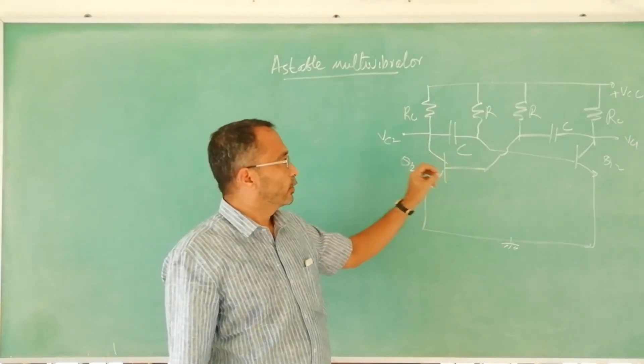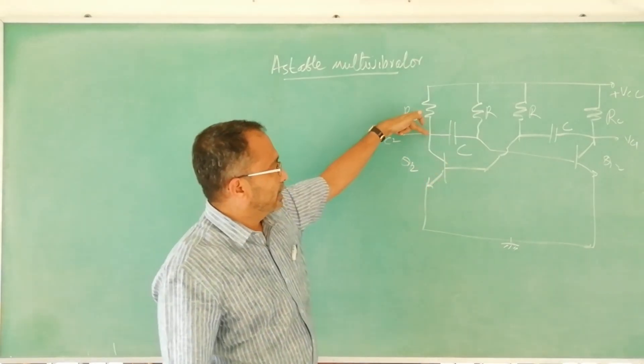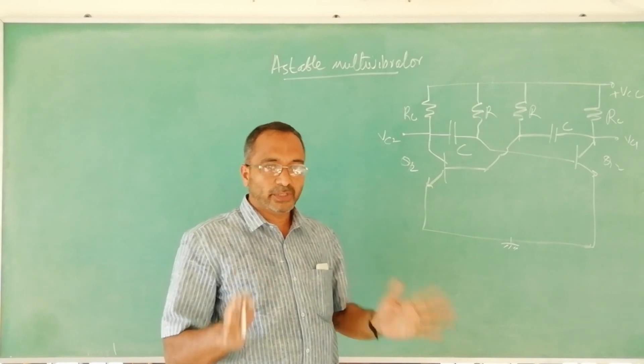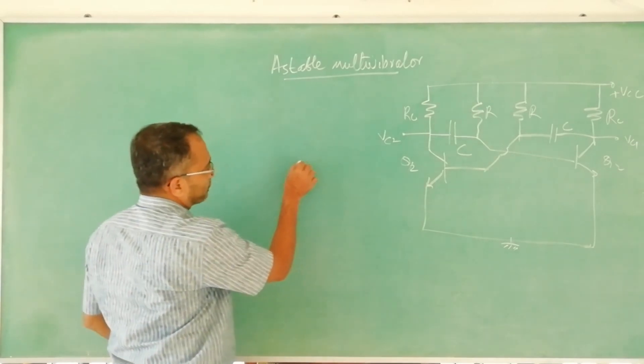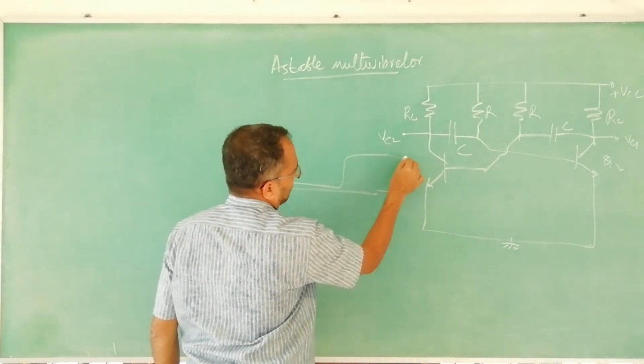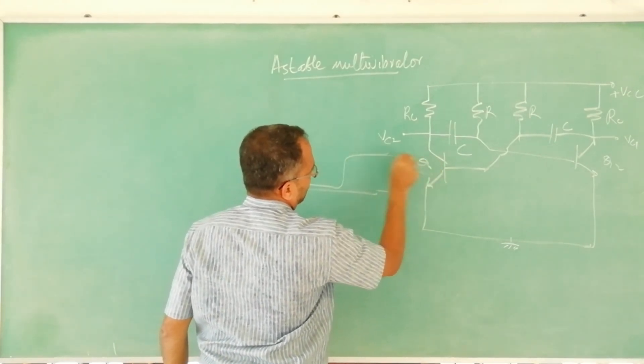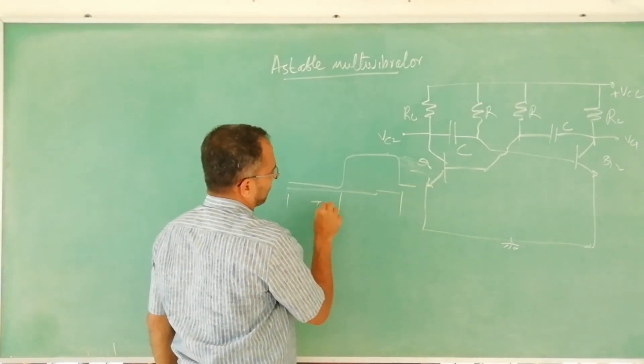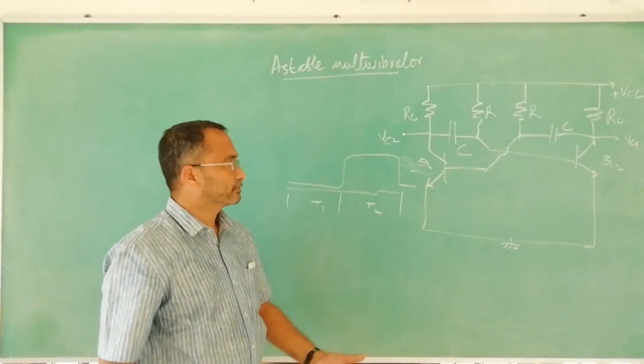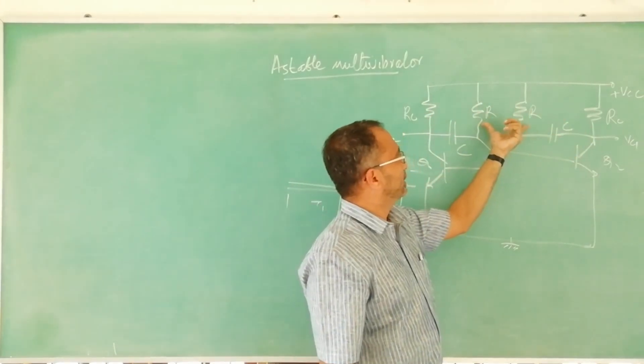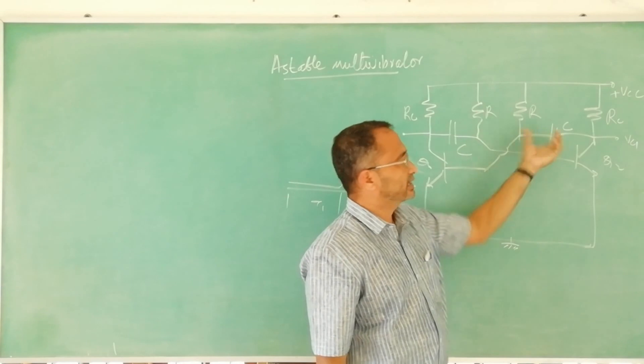This astable multivibrator using transistors will produce a square wave with duty cycle one by two. That means if the output waveform obtained from VC2 is in this manner, this time period as well as this time period T1 and T2 will be same. That's why particularly R and R made the same and this C and C are made same.